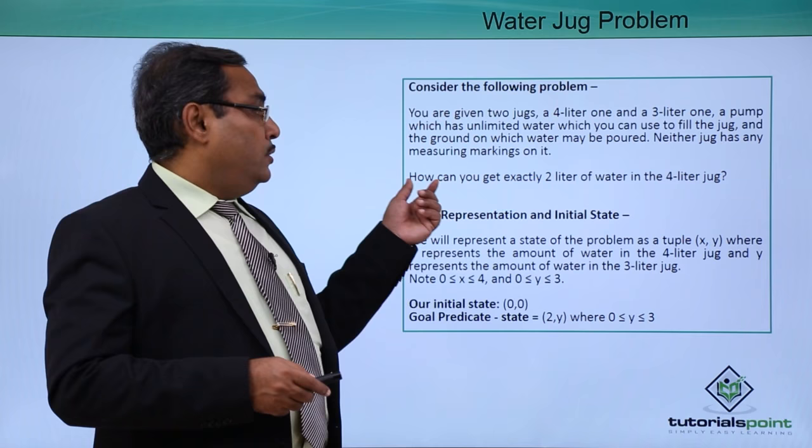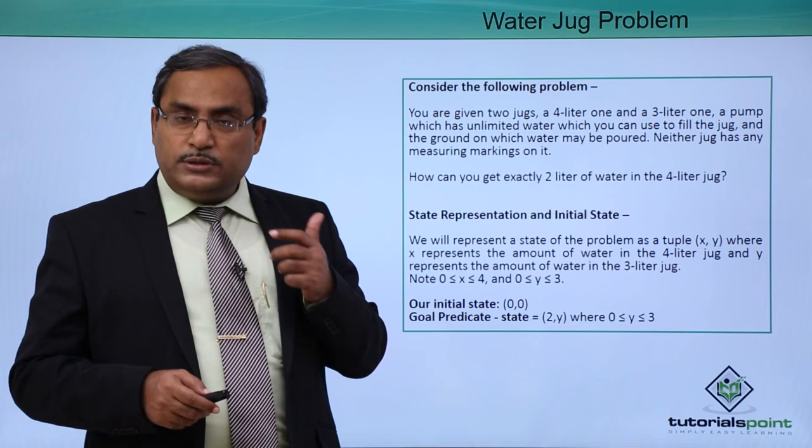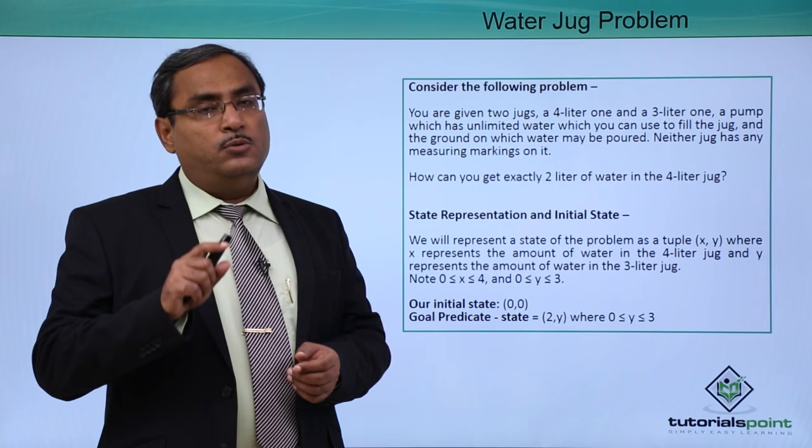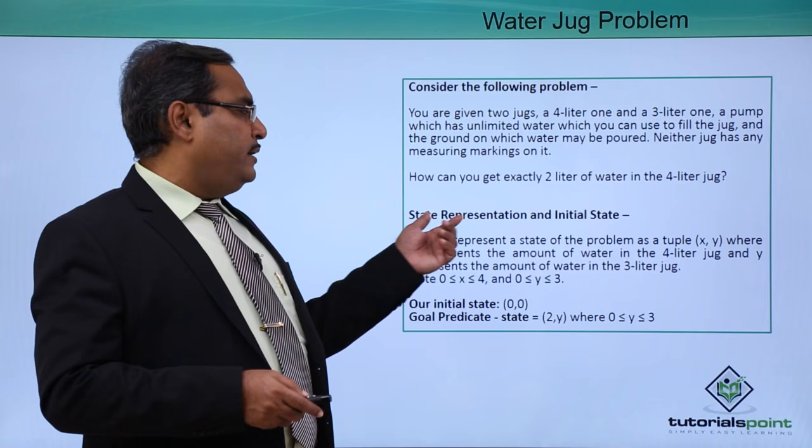Neither jug has any measuring mark on it. The goal is: how can you get exactly 2 litres of water in the 4-litre jug? At the end we must have 2 litres of water in the 4-litre jug, but there is no measuring mark on either the 4-litre jug or the 3-litre jug.